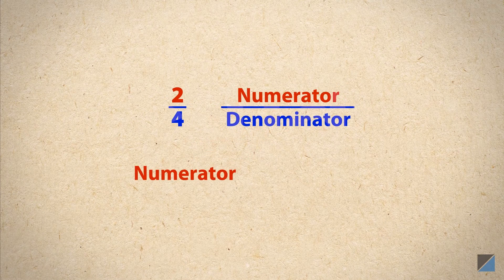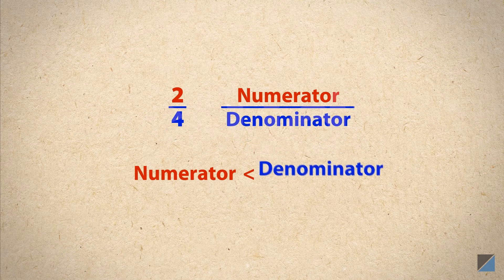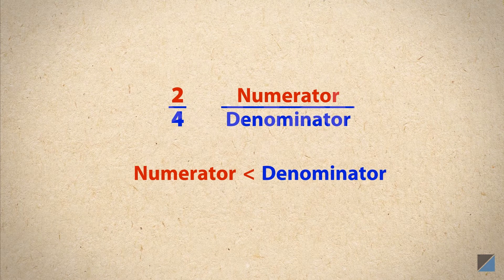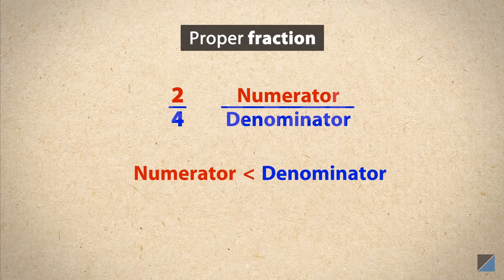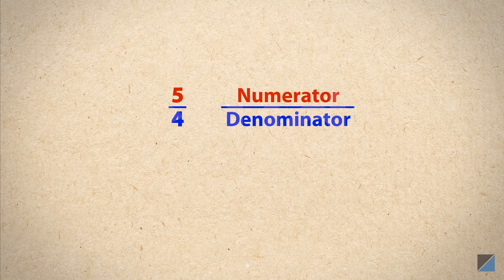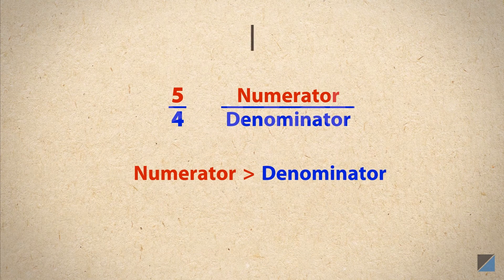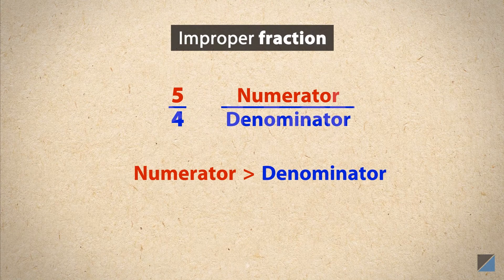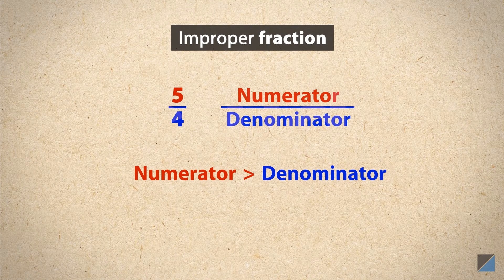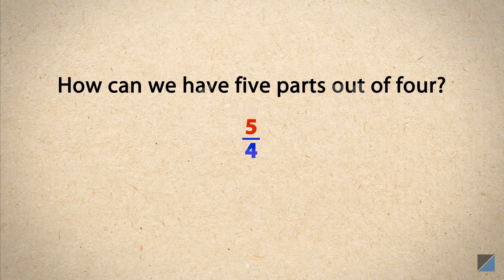If the numerator is greater than the denominator, then the fraction is called an improper fraction. It certainly looks improper. How can we have five parts out of four?